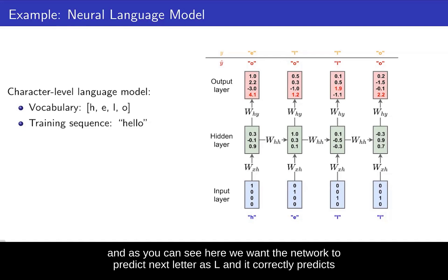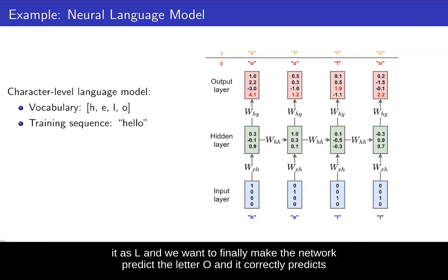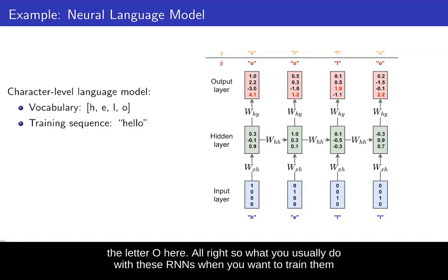As you can see, we want the network to predict the next letter L, and it correctly predicts L. And we want the network to finally predict the letter O, and it correctly predicts O.